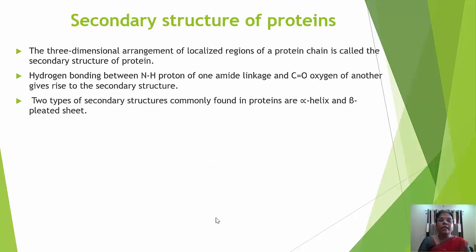Now, the secondary structure of protein. The three-dimensional arrangement of a localized region of the protein chain is called the secondary structure of protein. Hydrogen bonding between the NH proton of one amide linkage and the CO oxygen of another gives rise to the secondary structure — that is, one polypeptide chain attached to a second by hydrogen bonding. Two types of secondary structures commonly found in proteins are the alpha helix and the beta pleated sheet.